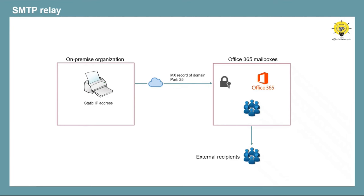Make sure port 25 is open on your network. In SMTP Relay, authentication is performed by the Office 365 connector using the IP address of your device configured within the connector, and based on this authentication the emails are sent to external recipients as well. Now let's move to the lab and configure these settings one by one.